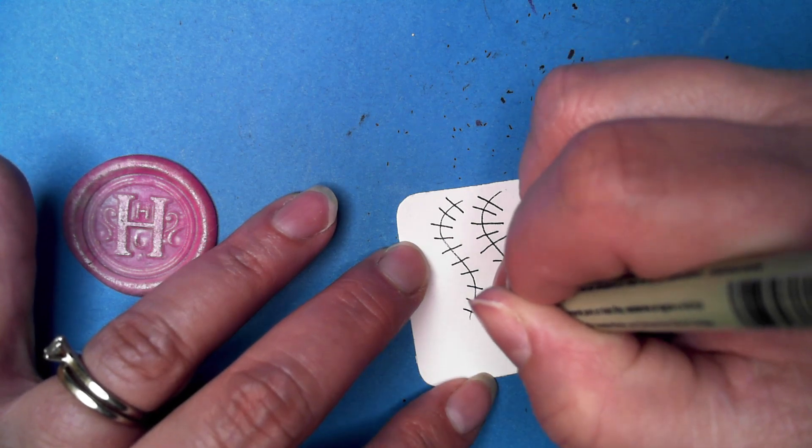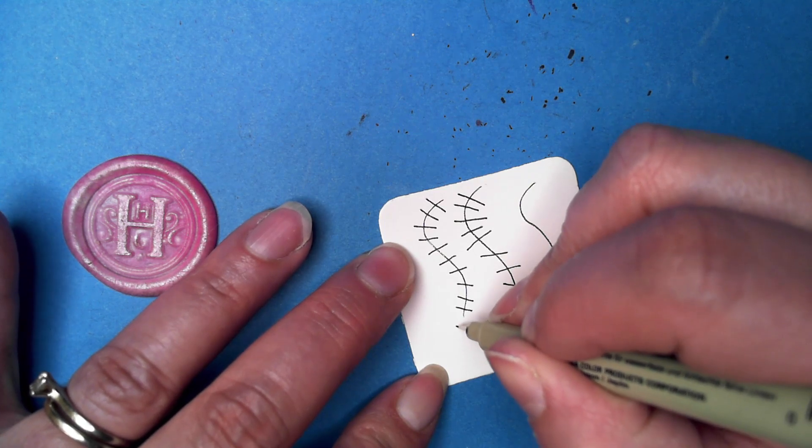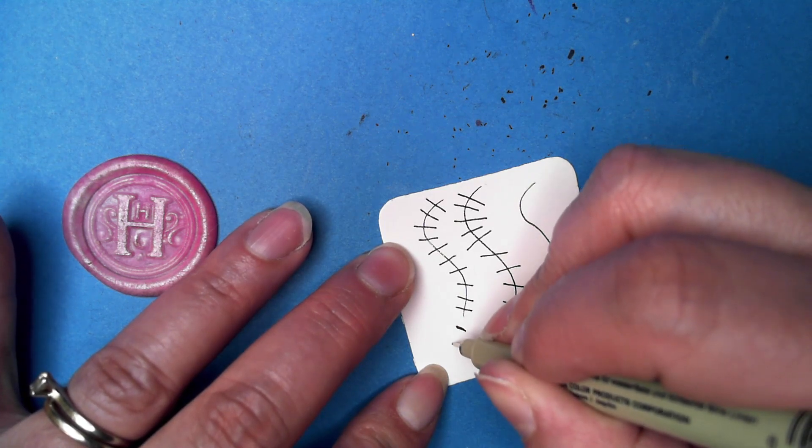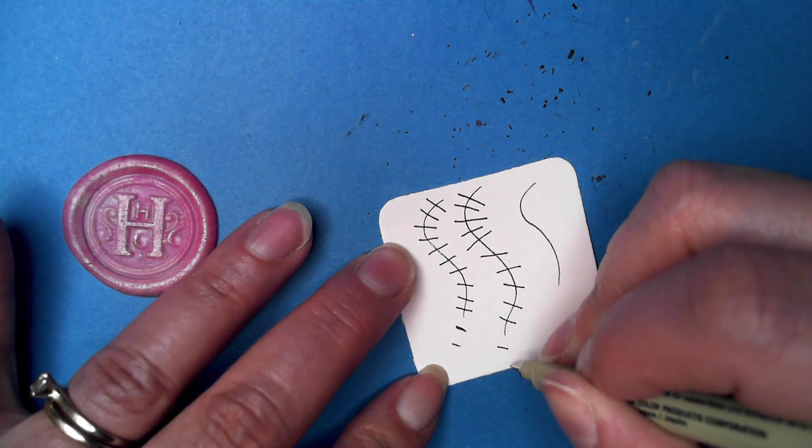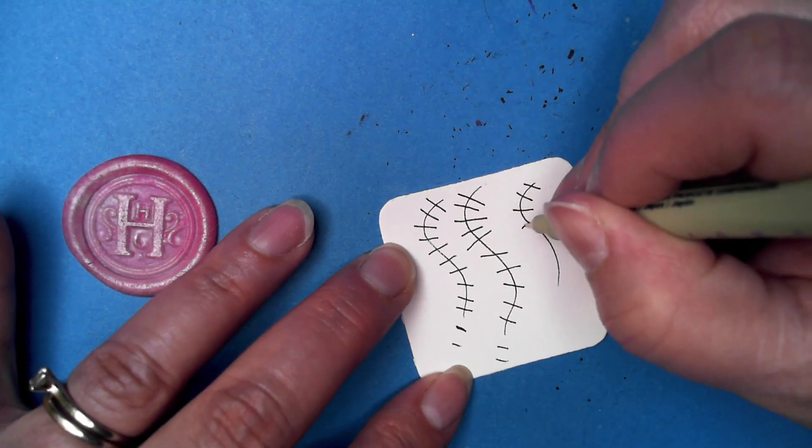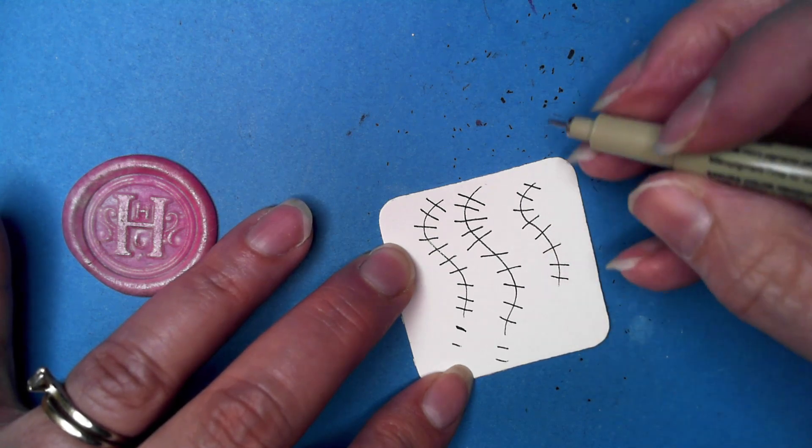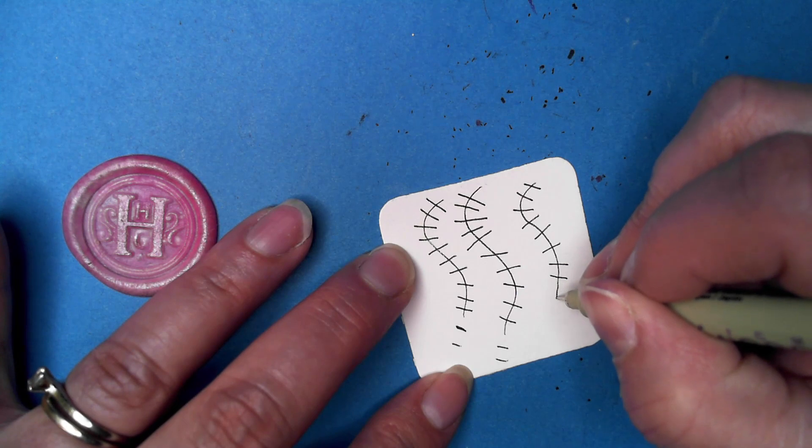And one thing that Michelle did at the bottom of hers was she just added a little bit bigger, some extra, just in the air lines like that. Now let's have this one go just a little bit.